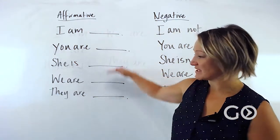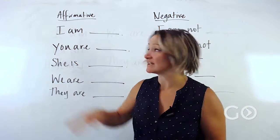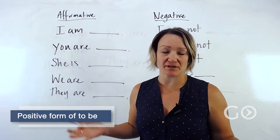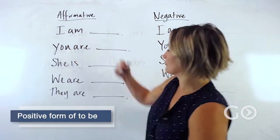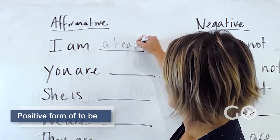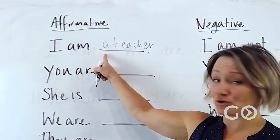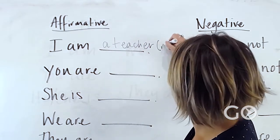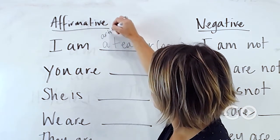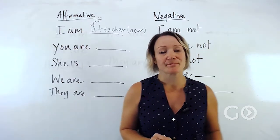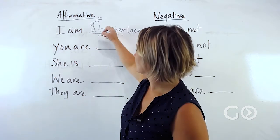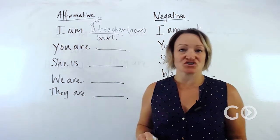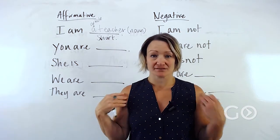Behind me I have the affirmative sentences. Affirmative means positive — the opposite of negative. So 'I am' — I left this blank so we can create our own sentences. I am a teacher. So I can put a noun there with an article. 'I am a teacher' — that's noun plus noun with an article. Or 'I am short' — that's an adjective.